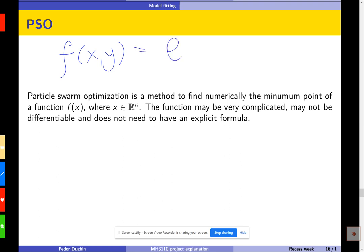that is, e to the power minus x squared minus 3y squared times, say, x plus x, y plus y cubed, something like this.